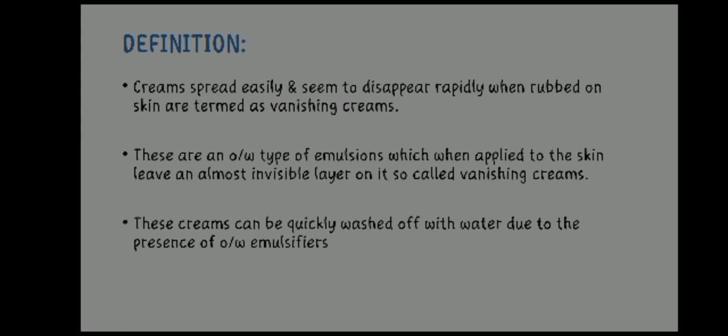Definition: creams that spread easily and seem to disappear rapidly when rubbed on skin are termed as vanishing creams. These are an oil-in-water type of emulsion which, when applied to the skin, leave an almost invisible layer on it — so called vanishing creams. There are two types of emulsions: water-in-oil and oil-in-water. These creams can be quickly washed off with water due to the presence of oil-in-water emulsifiers.